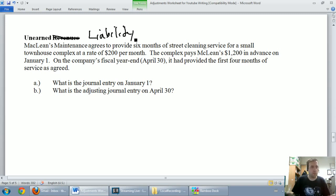So what I'd like to do is go through this problem and we'll look at how it works. It says, McLean's maintenance agrees to provide six months of street cleaning service for a small townhouse complex at a rate of $200 per month. The complex pays McLean's $1,200 in advance on January 1st. The company's fiscal year end is April 30th and at that time it had provided the first four months of service as agreed. So, record the journal entry on January 1st and the adjustment on April 30th.